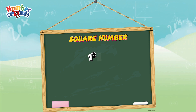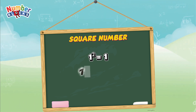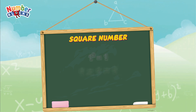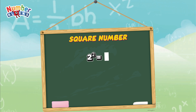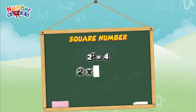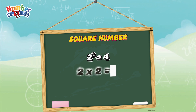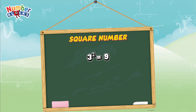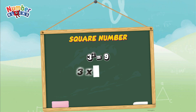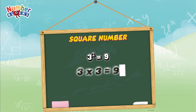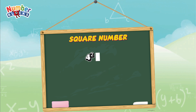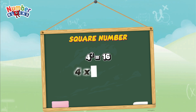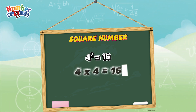One squared is equals to one, or one multiplied by one, is equals to one. Two squared is equals to four, or two multiplied by two, is equals to four. Three squared is equals to nine, or three multiplied by three, is equals to nine. Four squared is equals to sixteen, or four multiplied by four, is equals to sixteen.